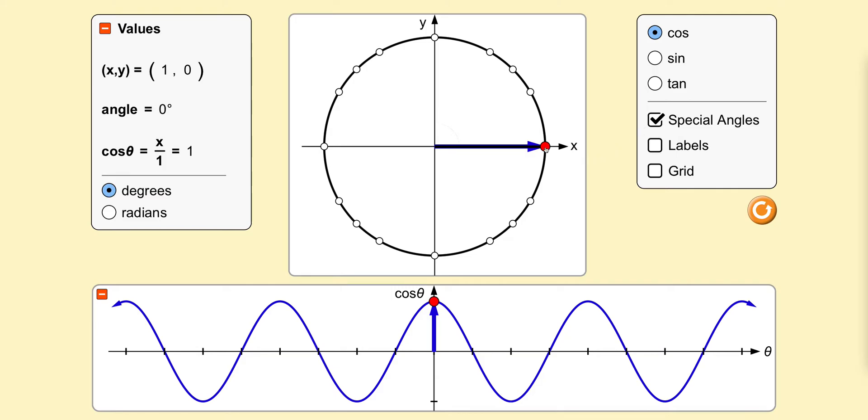Experiment with clicking on the red dot and moving it around the unit circle, noticing the changing coordinates on the left as well as the angle and the value of cosine.